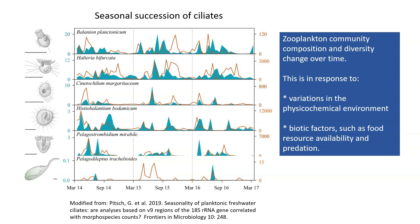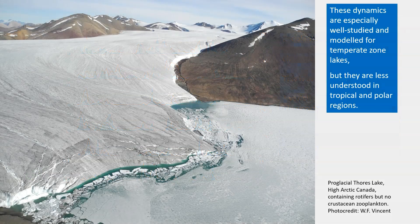Plankton community composition and diversity change over time. This is in response to variations in the physical chemical environment and biotic factors such as food resource availability and predation. These dynamics are especially well studied and modelled for temperate lakes, but they are less understood in tropical and polar regions.